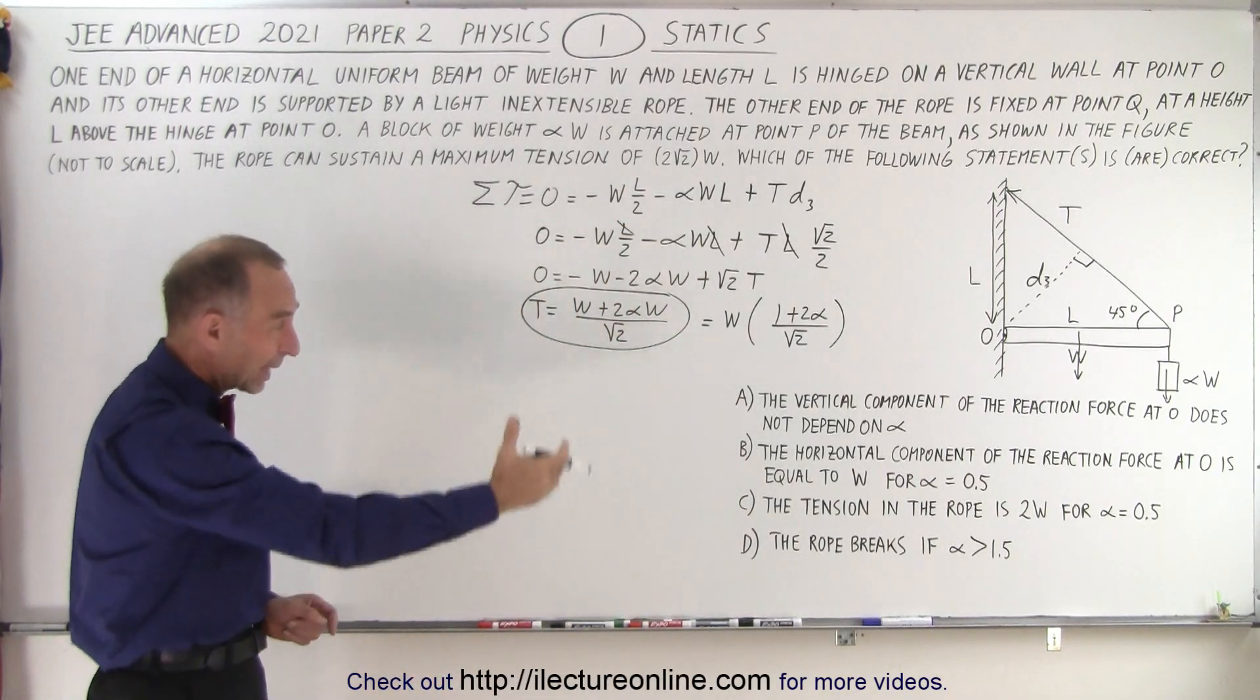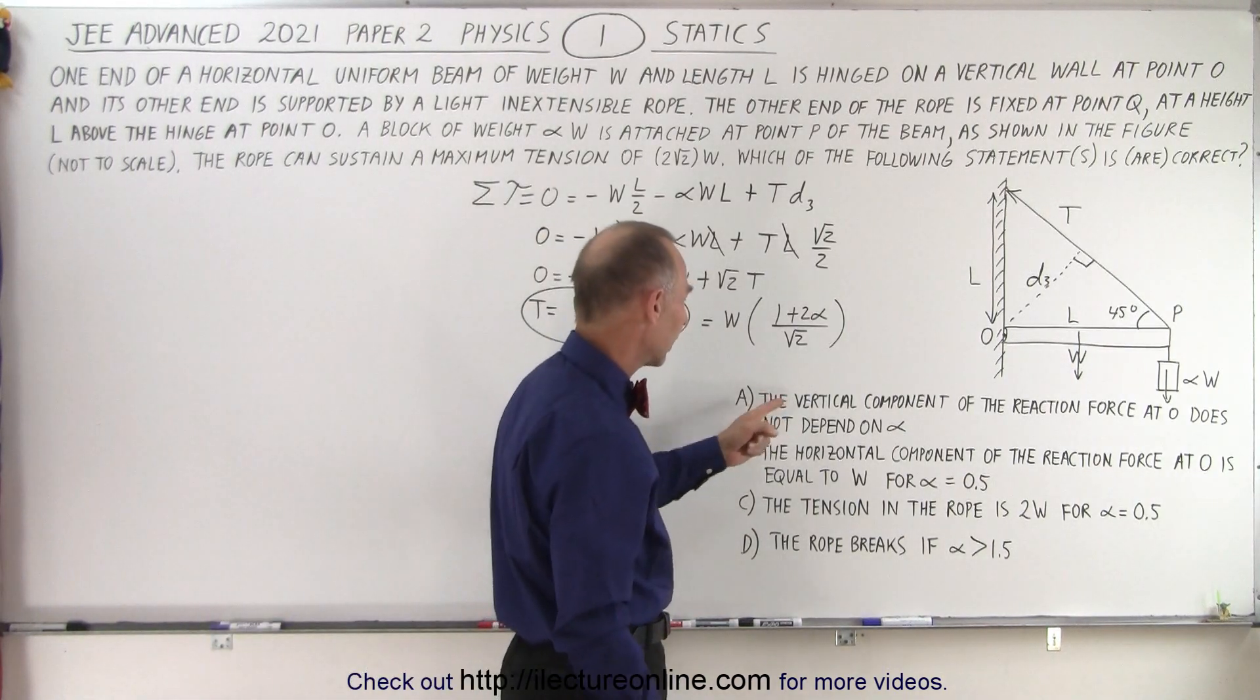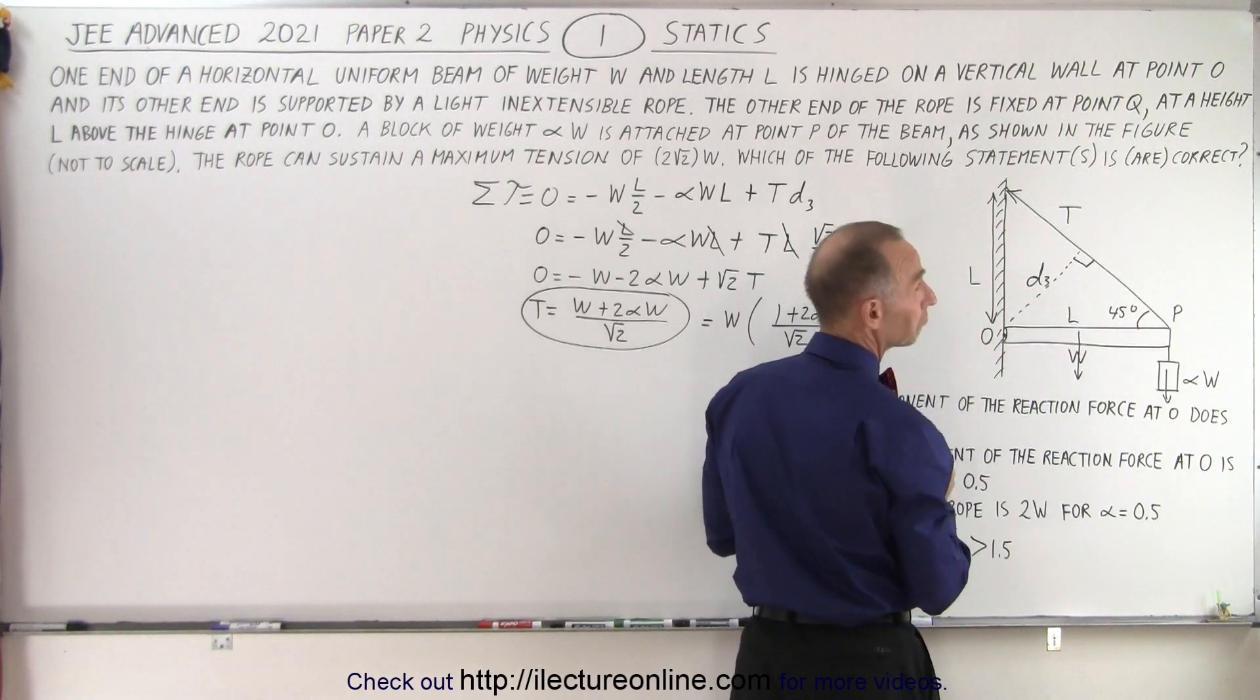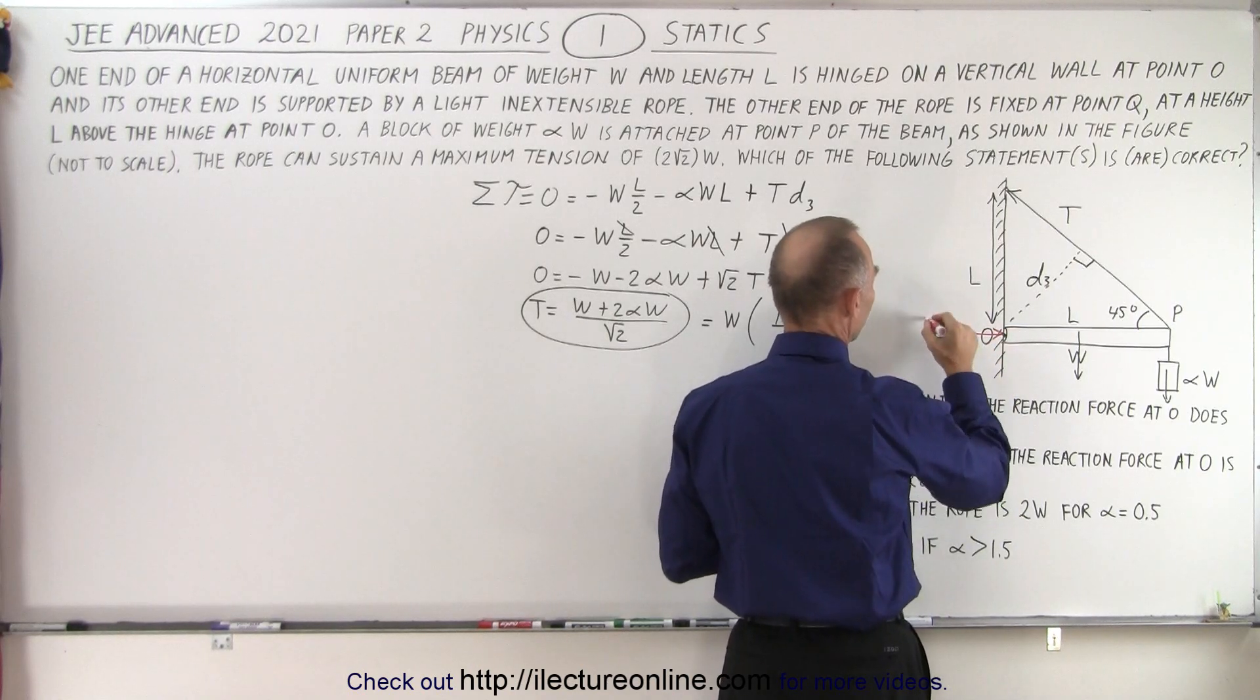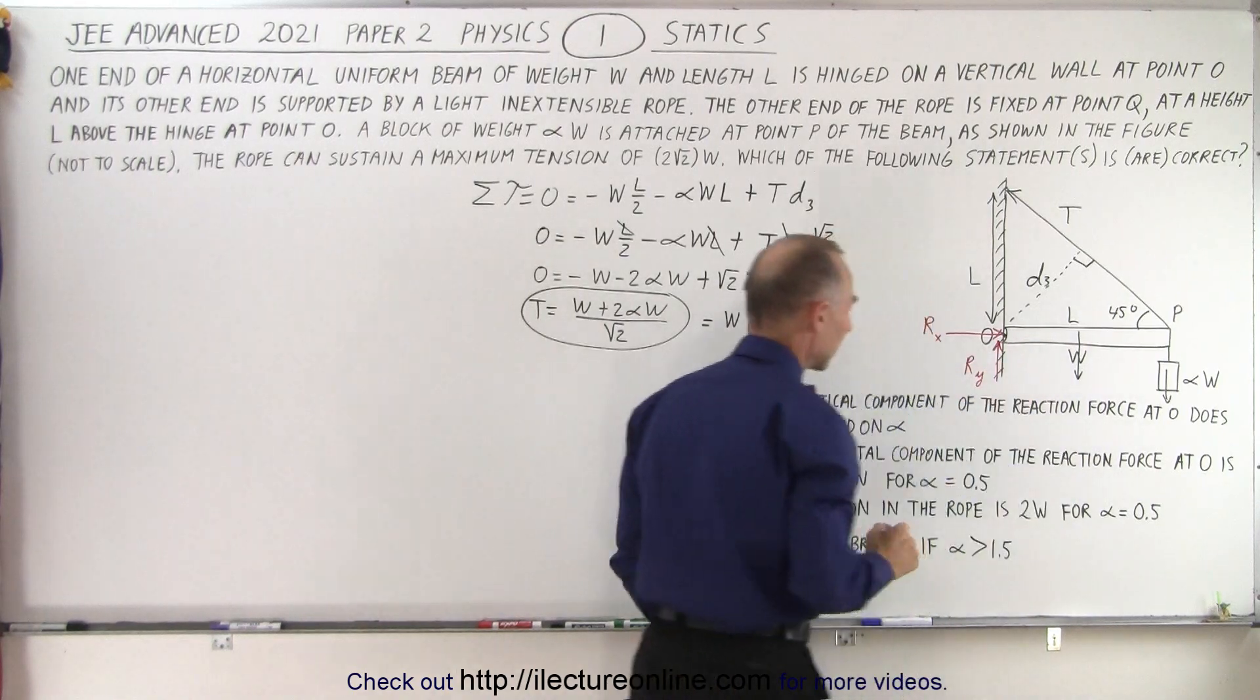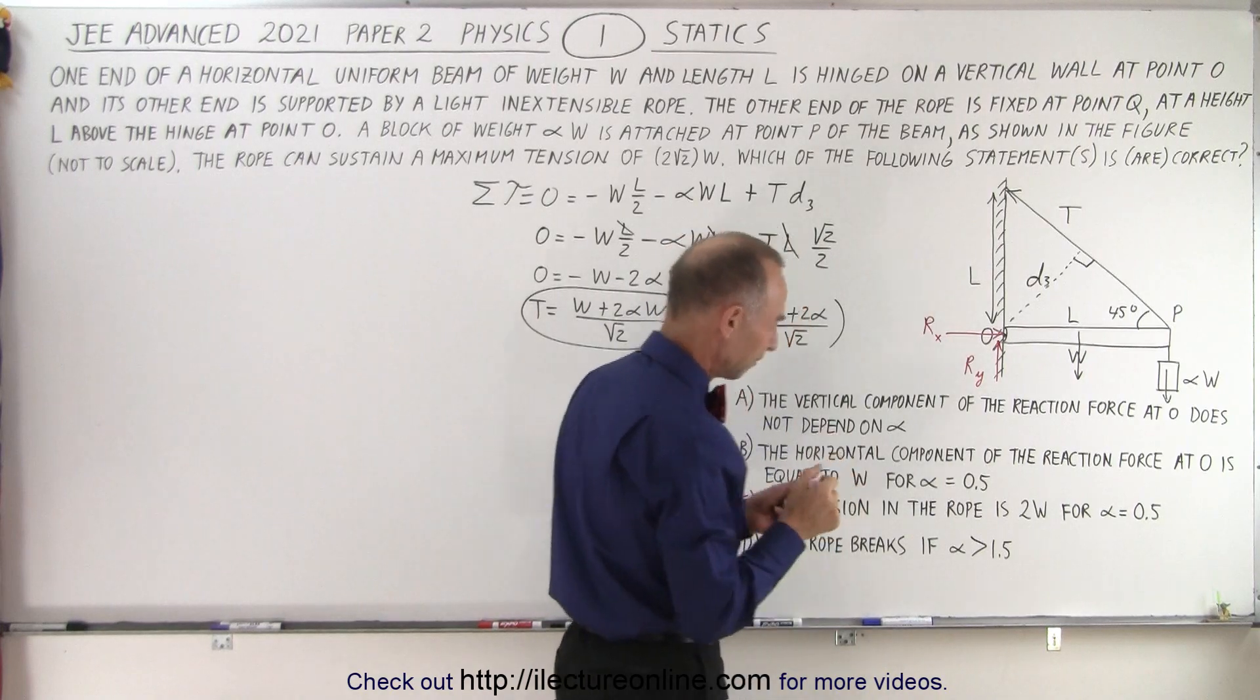So now that we have a value for the tension, let's see if we can answer some of these questions to see if they are correct or not. The first two deal with the vertical and horizontal component of the reaction force at O. The beam is going to be pushed into the wall. That means there is going to be a horizontal reaction force, called R in the X direction. And also notice that the weight of the beam is kept up by the wall, so there is going to be a vertical reaction force, R sub Y.